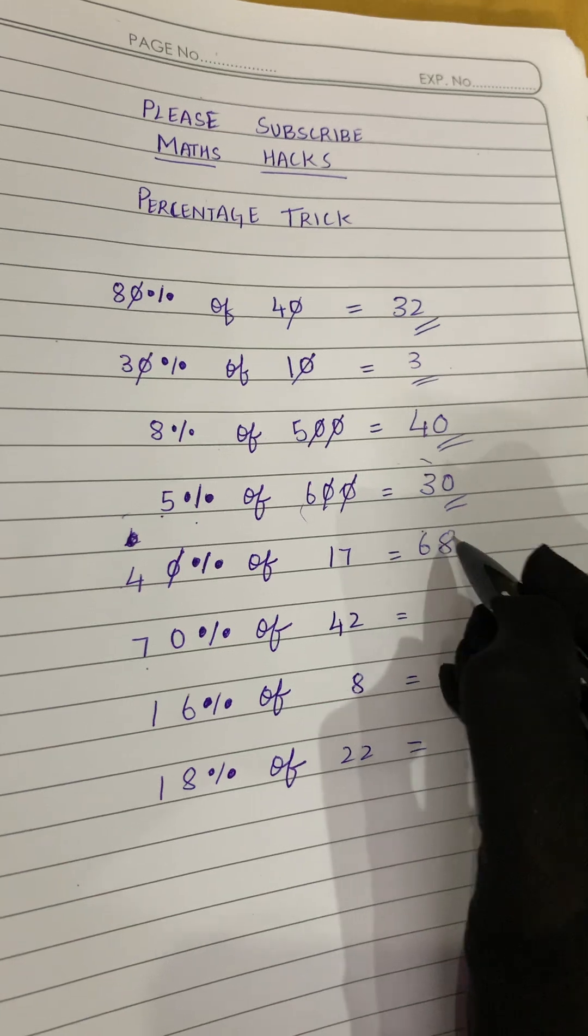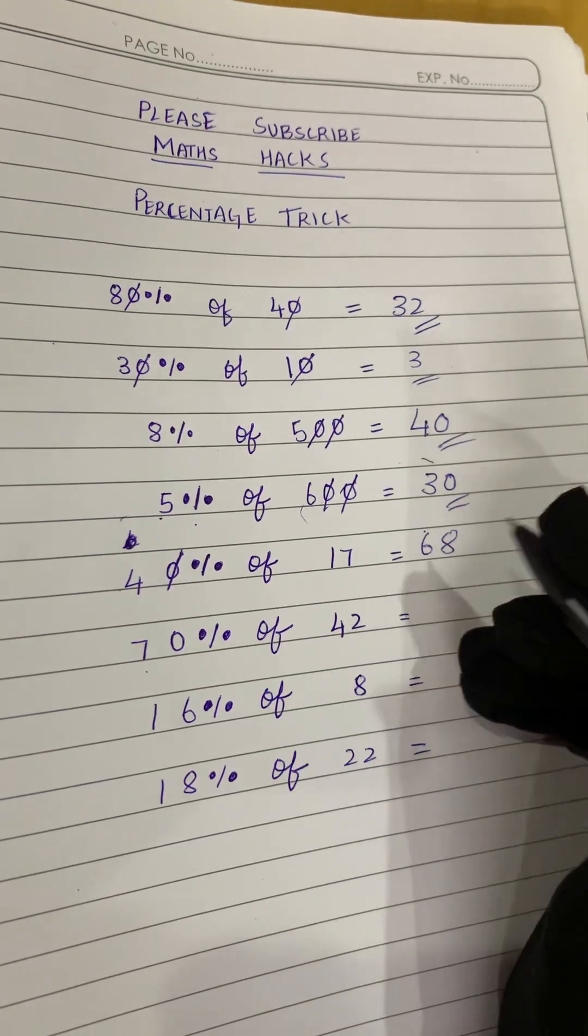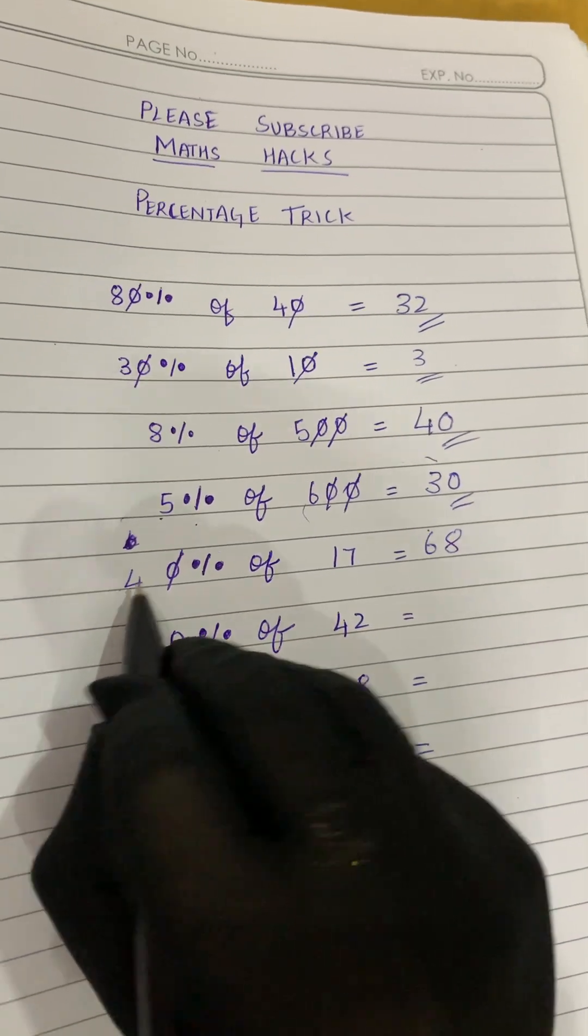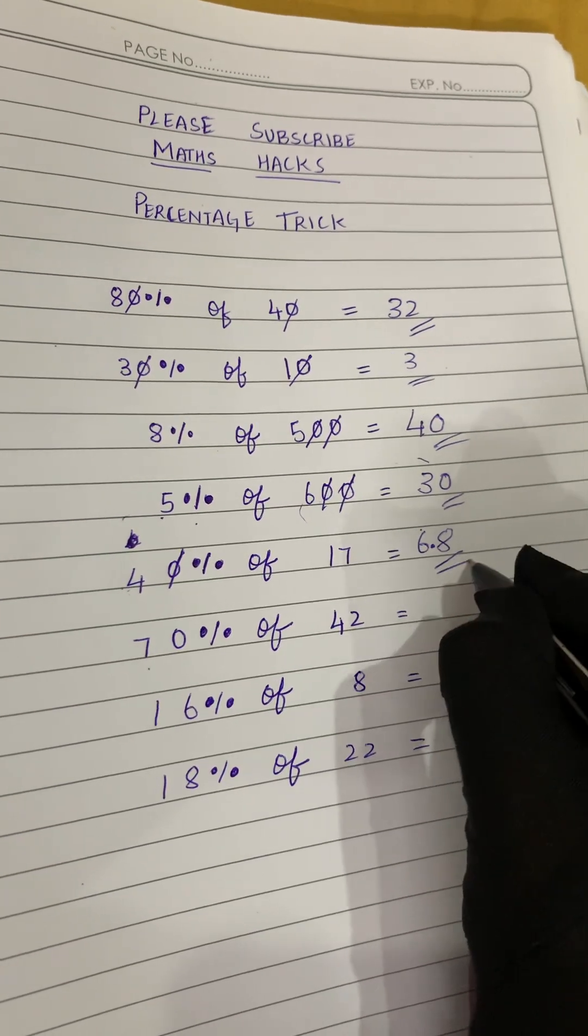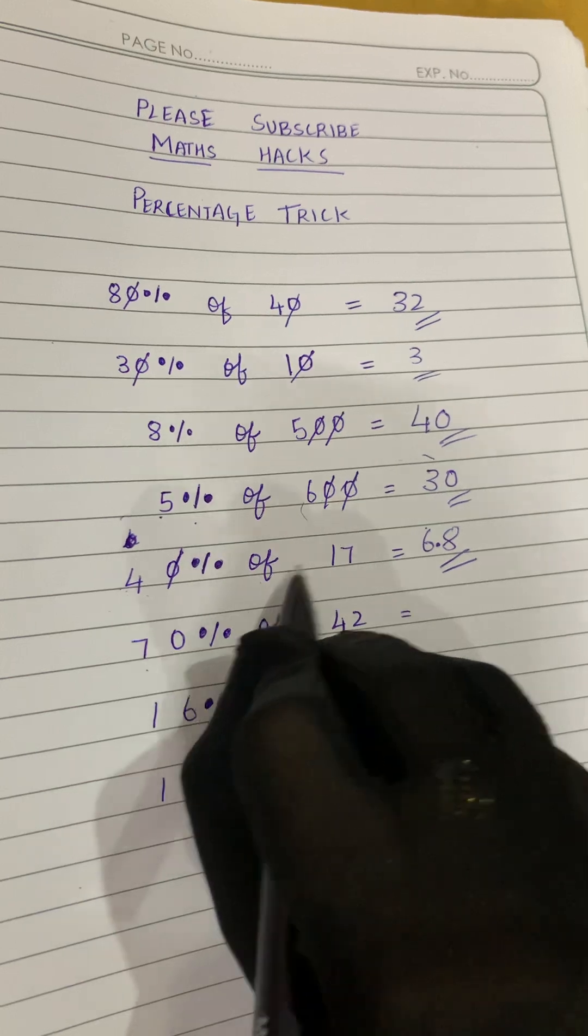But we have to get the answer in decimals. So here there is only one digit, so we will put a point after one digit. So our answer will be 6.8. So 40 percentage of 17 is 6.8.